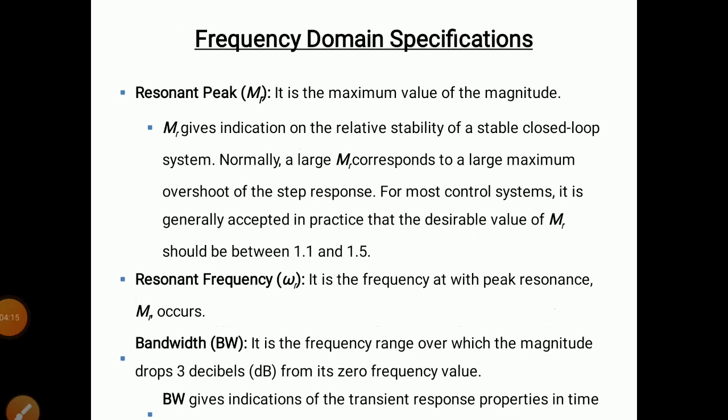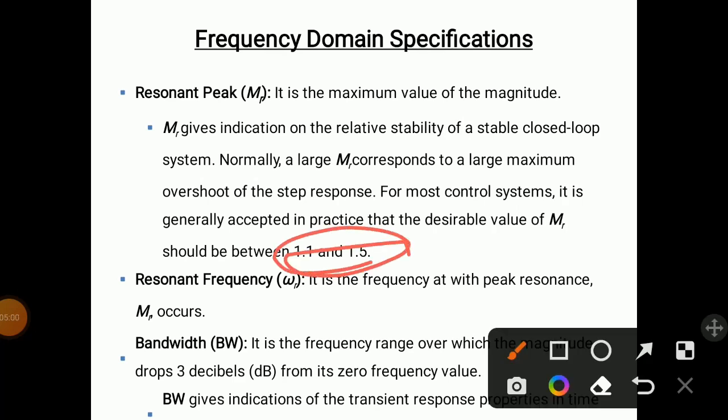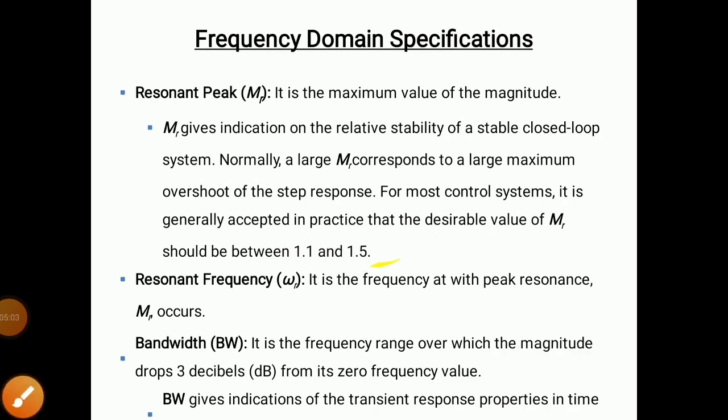There are frequency domain specifications. The first is the resonant peak, denoted by Mr, which is the maximum value of magnitude. Mr gives an indication of the relative stability of a stable closed-loop system — a large Mr corresponds to a large maximum overshoot of the step response. For most control systems, the desirable value of Mr should be between 1.1 and 1.5.